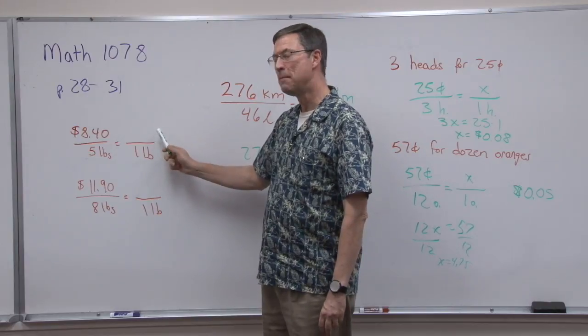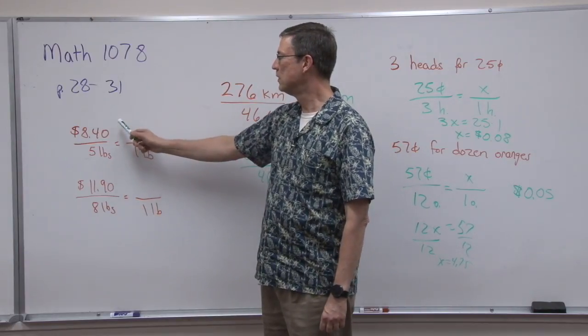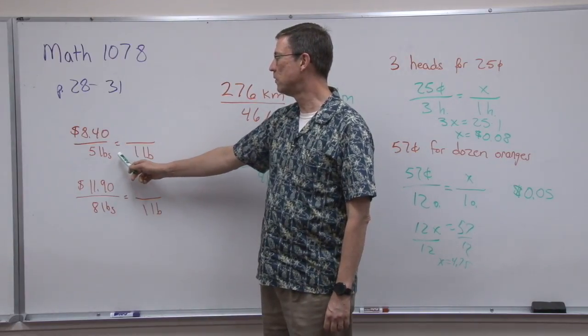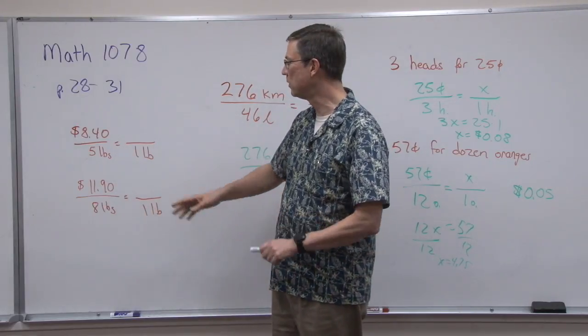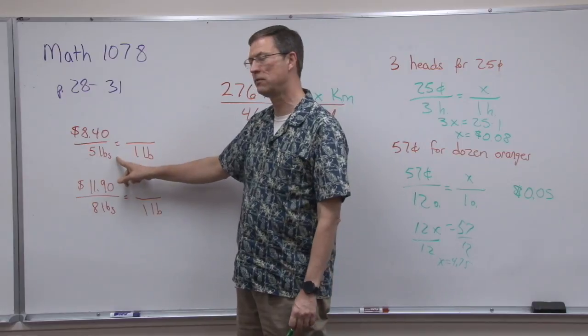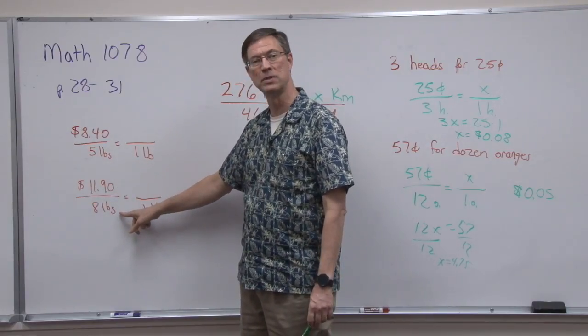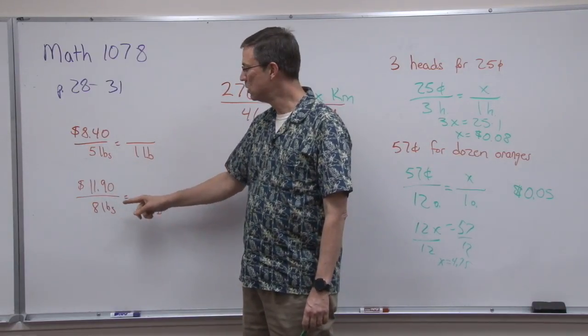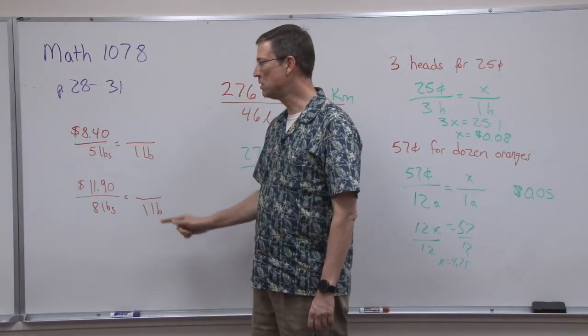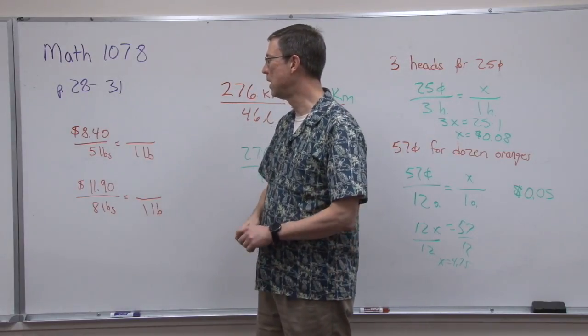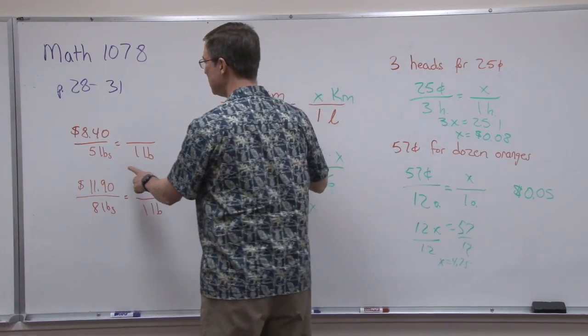So this is the burger per pound. If it's eight dollars and forty cents for five pounds, we need to figure out what is the price for one pound. At another store, they don't have it for five pounds - they have eight pounds, but it's $11.90. So in order to compare them and know which is the better deal, we have to figure out what is the price per pound.